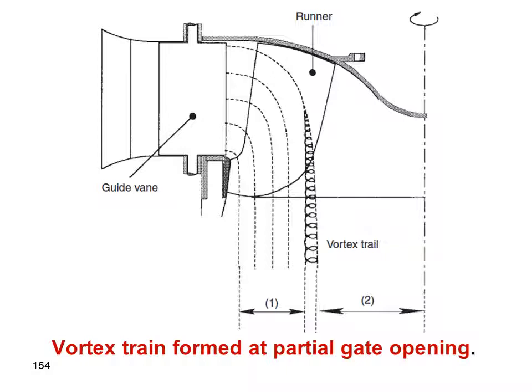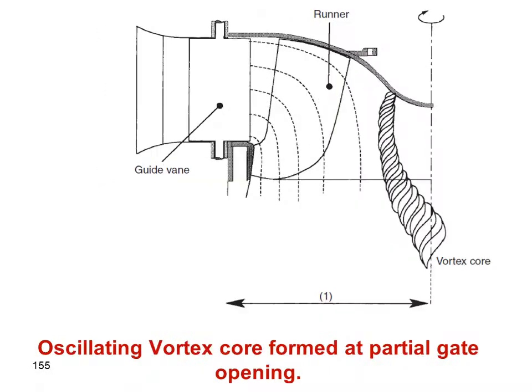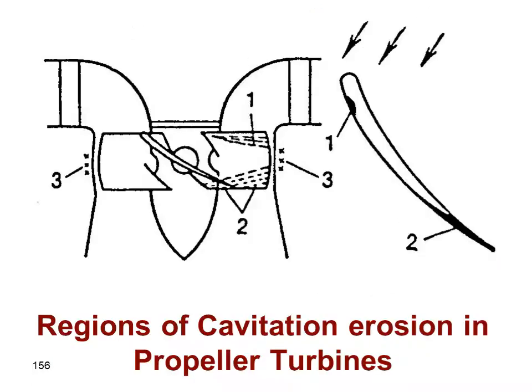Here we see a street of vortex cavitation bubbles in a Francis turbine, generated inside the runner and traveling into the draft tube. There is also visible damage inside the runner near the outlet at the outer diameter of the plates.